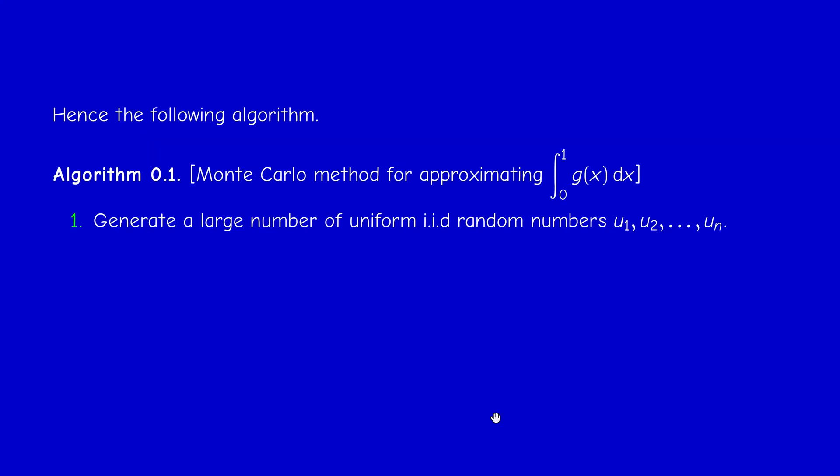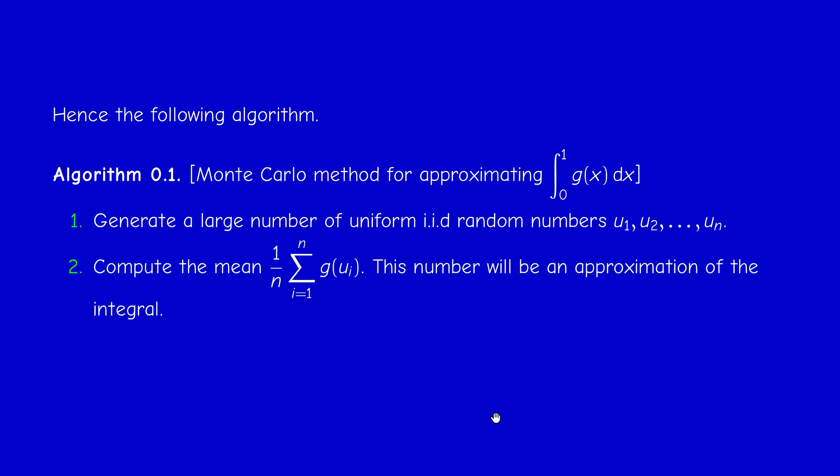The Monte Carlo method for approximating the integral from 0 to 1 of a summable function is: first, generate a large number n of i.i.d. uniformly distributed random variables on (0,1); then compute their mean. When n is large, this is a good approximation of θ.